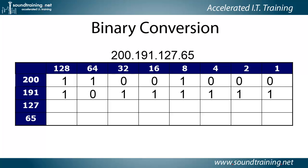Let's try 127. Can we subtract 128 from 127? Nope. So we put a 0 there and 1's in the remaining placeholders. Now, suppose instead of an 8-bit binary number, what if we had a 9-bit binary number? The highest order bit value would be double 128, or 256.